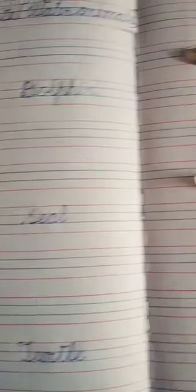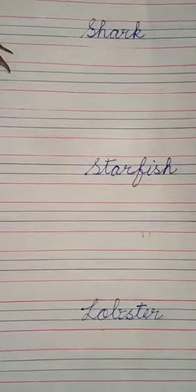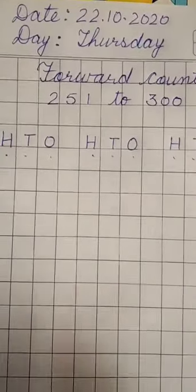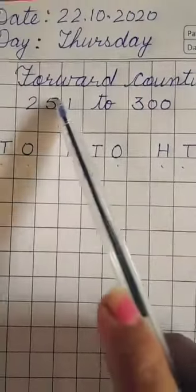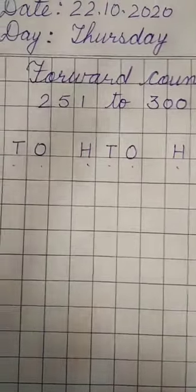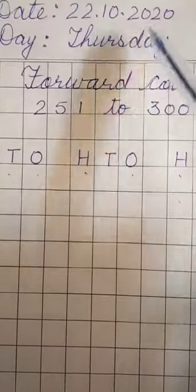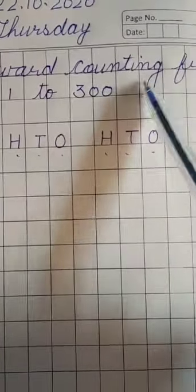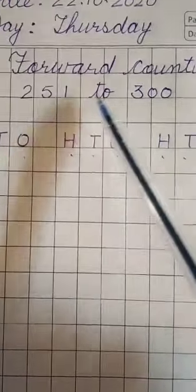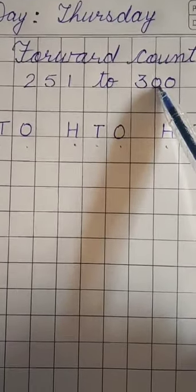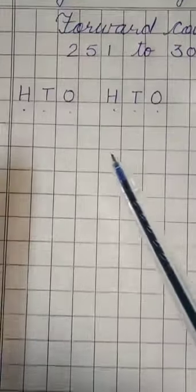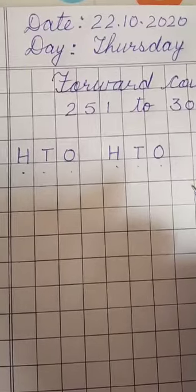And now moving on to the second lecture which is maths. In maths today we will do forward counting from 251 to 300. So for that take out your maths notebook and write date and day on top. After this you have to write the topic which is forward counting from 251 to 300. And then you have to maintain your notebook like this.